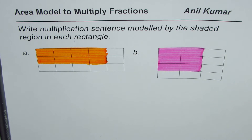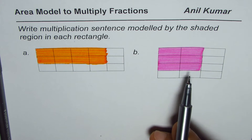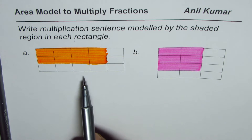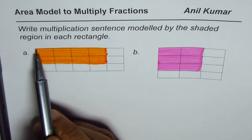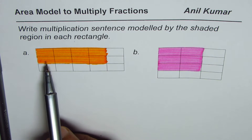I'm Anil Kumar and here is a very simple explanation for the area model to multiply fractions. The question is to write a multiplication sentence modeled by the shaded region in each rectangle. We have two rectangles here and we need to write a product of fractions to represent the shaded region. I'll do part A and leave part B for you.